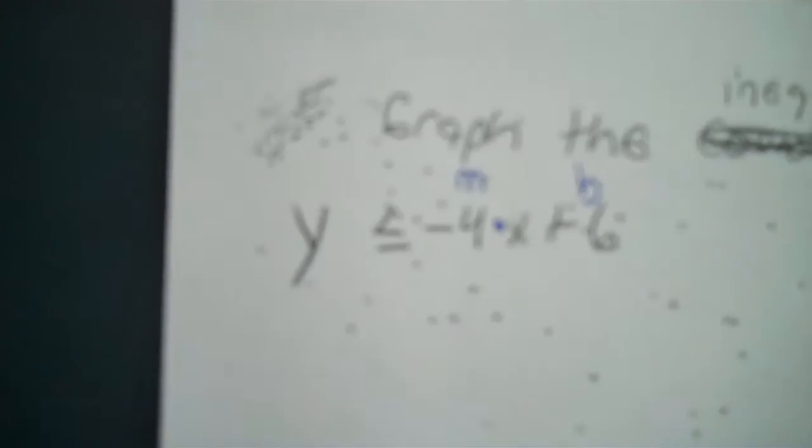Same thing as last week. Grab the inequalities. Y is less than or equal to negative 4x plus 6. So, then I copy that down. Then, what I do is I need to make my line, my dividing line.